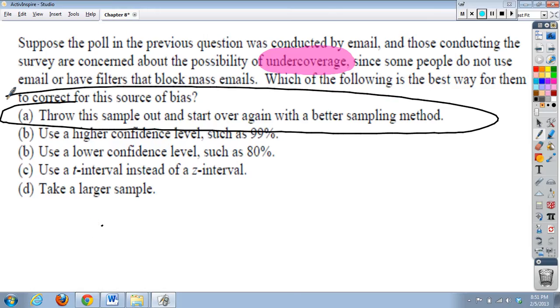A. Throw the sample out. Do it all over again. Okay? Don't do it by email. Try to make it more random. Try to cover your population better. Okay? You can try these other things. But every time you do this, you're going to be making your interval wider or narrower. A way, or not really a way, but you're still going to be focused on an incorrect estimate due to the undercoverage.